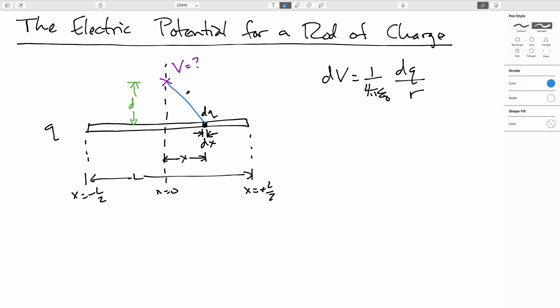This distance here is our R. And since my integrating variable is X here, we'll use the Pythagorean theorem to say it's the square root of X squared plus D squared.